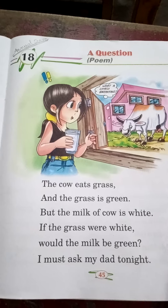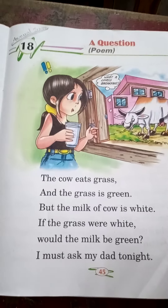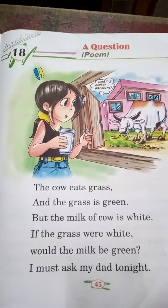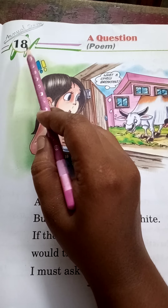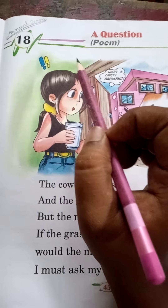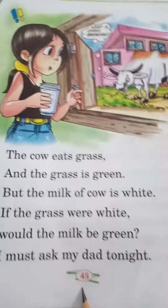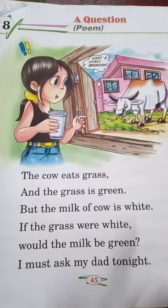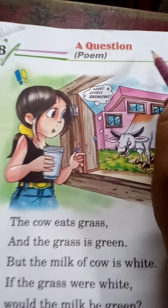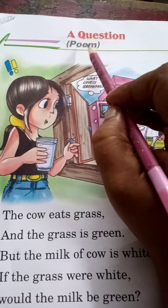Good morning students. Today we read chapter 15 from your reader book. Chapter 15 is going to be on your happy exam. Everybody take out your reader book and open chapter number 18, page number 45. So students, hope all of you are ready. Now start with me. Today we read a poem. The poem name is 'A Question.'